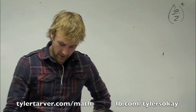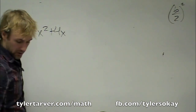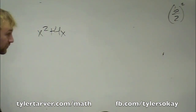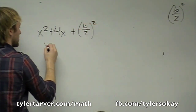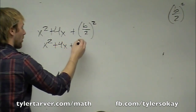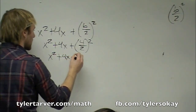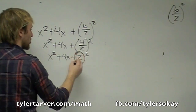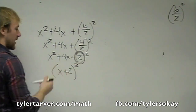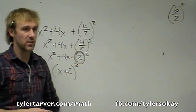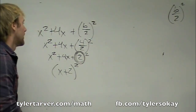Let's do an example: x squared plus 4x. We're going to add in our b over 2 squared. Our b in this equation is 4. 4 divided by 2 is 2. Using the shortcut — once you get there, the number is positive 2, and that goes right in the binomial: x plus 2 squared. That's your answer.